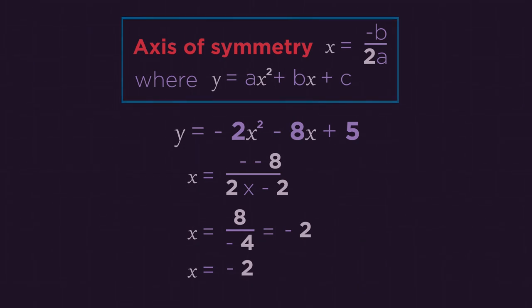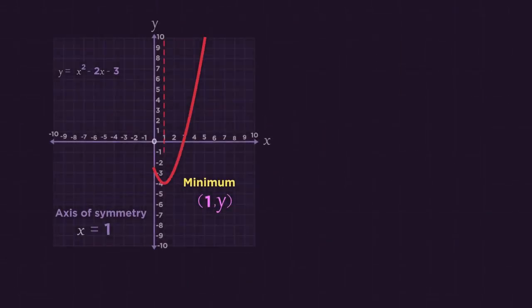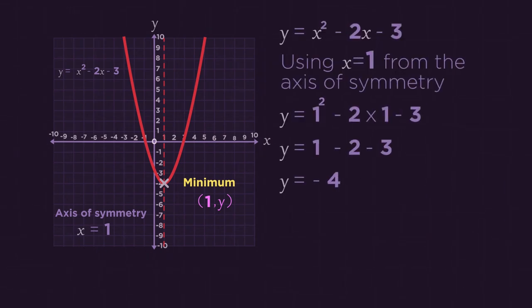But why stop there? We can find out the y coordinate of the turning point, not just the line of symmetry. We use our x value from the axis of symmetry and just substitute that into the original quadratic equation. So the coordinates of the turning point are 1, negative 4.